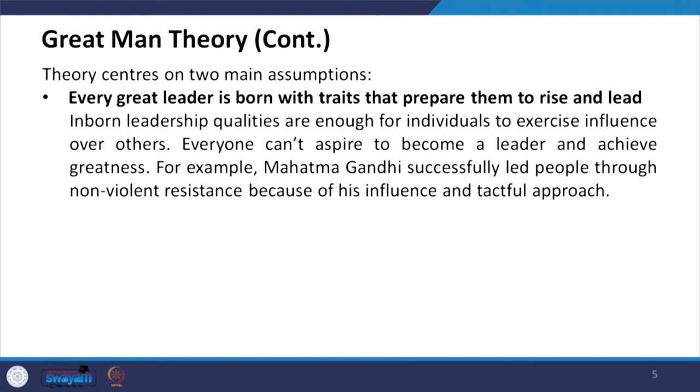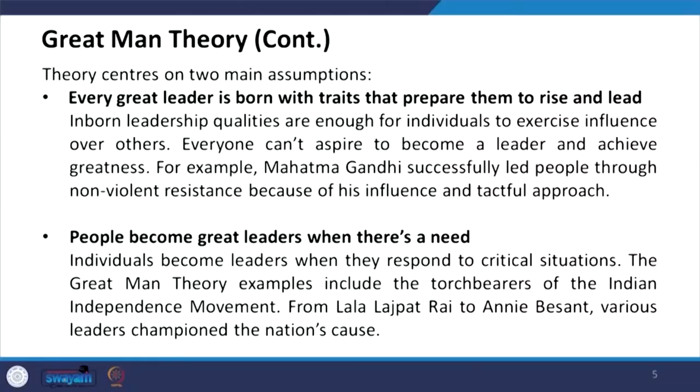From childhood, inborn traits can be observed — like when Chanakya selected Chandragupta through observation, where he found those traits. Chandragupta is an outcome of trait theories and contingency and situational theories, where the environment was provided and skills were developed. People become great leaders when there is a need. Individuals become leaders when they respond to critical situations. Great Man theory examples include the torchbearers of the Indian independence movement — from Lala Lajpat Rai to Annie Besant — various leaders who championed the nation's cause.